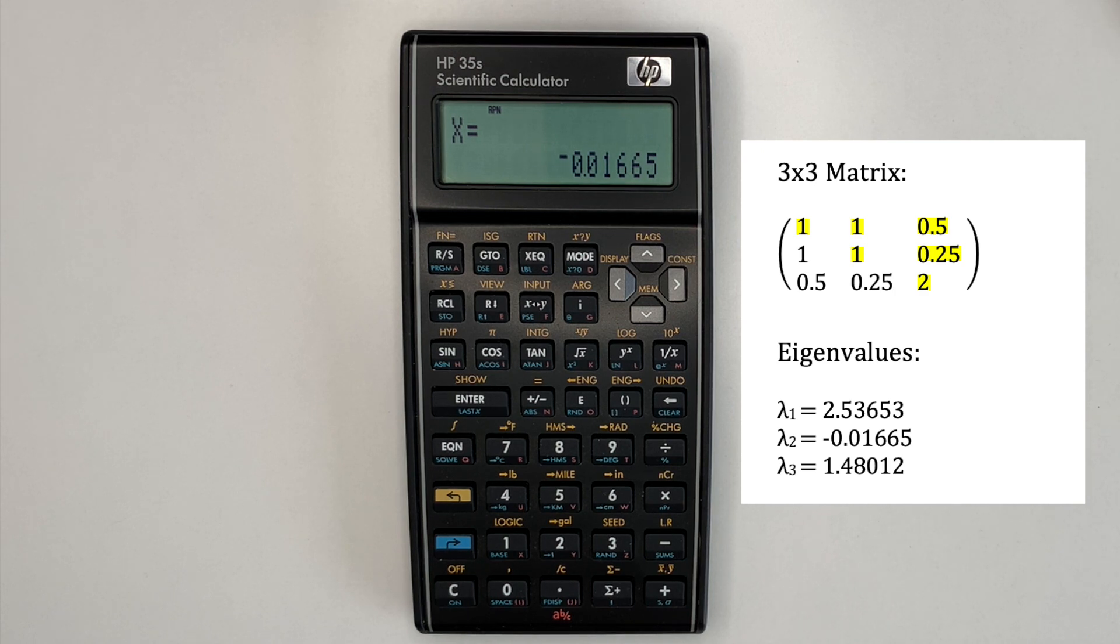Second value, negative 0.01665, which is correct. And the final value, 1.48012, which is also correct.